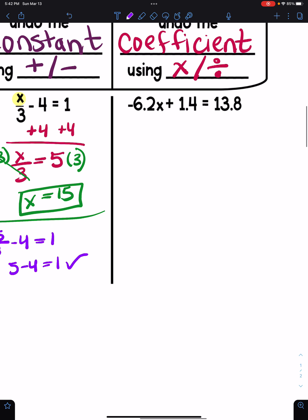And here's our last example. It has decimals, but you still do it the same way. I'm going to find our variable. It's being multiplied by negative 6.2 and added to 1.4. The opposite of adding 1.4 is to subtract 1.4 from both sides, undoing my constant term first and saving that coefficient for my second step.